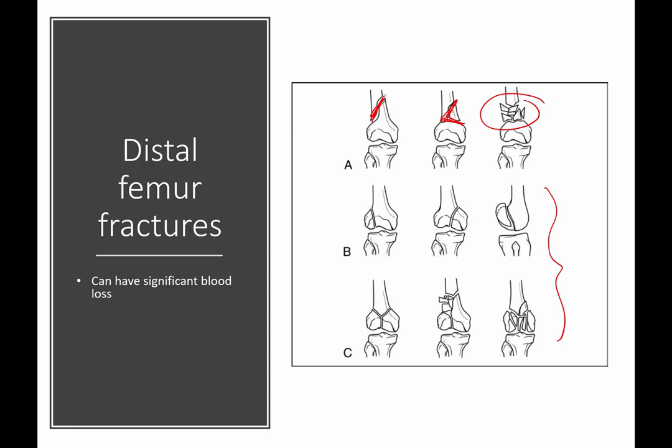This is not a finger fracture — it's a femur, so you can have a lot of bleeding, and that's something to keep in mind when managing these patients. They should usually be admitted to the hospital. By and large, you should be asking yourself whether there's any reason not to admit the patient. They usually require surgical treatment — it could be open reduction internal fixation, plates, screws, or an intramedullary nail, depending on the fracture pattern.